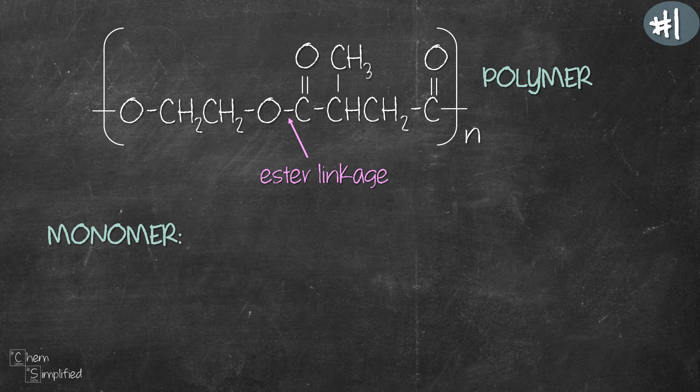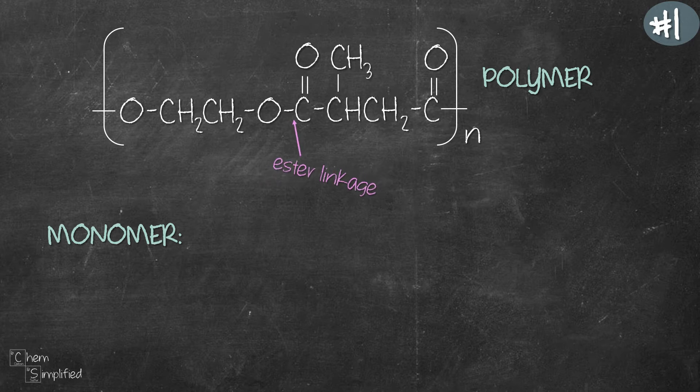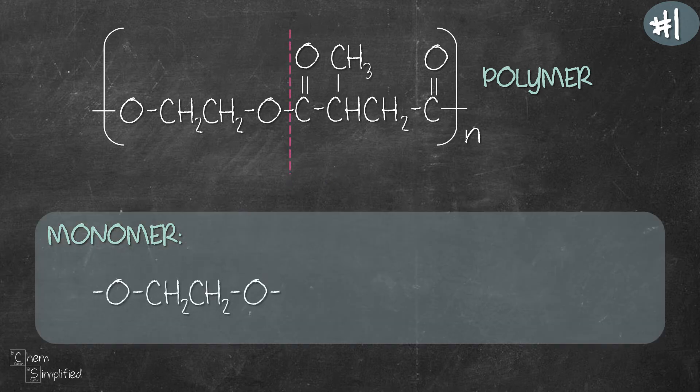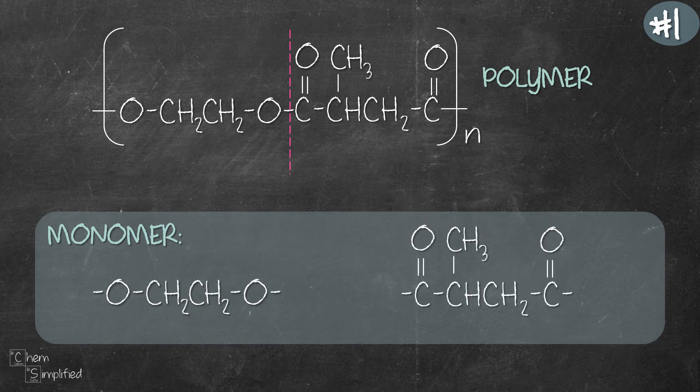Let's jump straight to our first example. We know this is a polyester because we can see the ester linkage. Therefore, it means the monomers are joined through this bond. Once we figure out the two parts, let's copy them down just the way we see it. Then we add in H to oxygen and OH to C double bond O. And there we have it, the structure of the two monomers that made up this polyester.